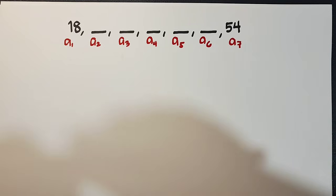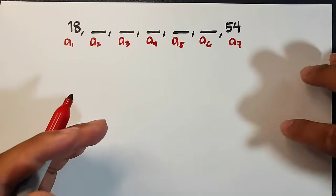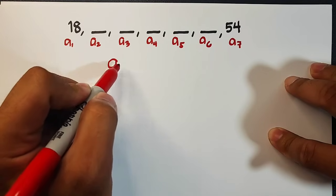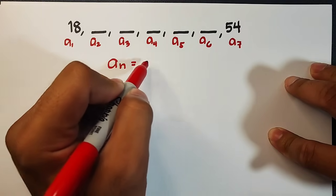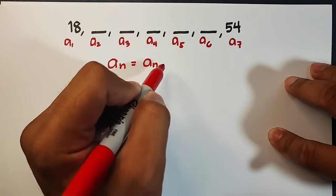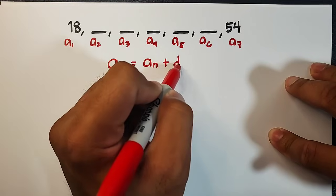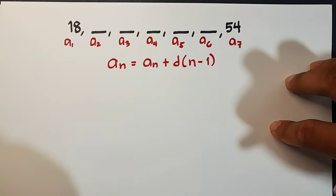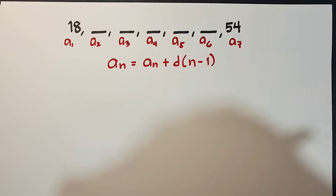Now for us to solve or to find the 5 missing numbers between 18 and 54, we will use this formula. We have a sub n is equal to a sub 1 plus d times n minus 1. So how are we going to use this formula to find the missing numbers?